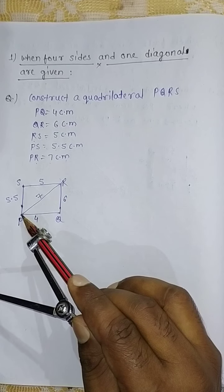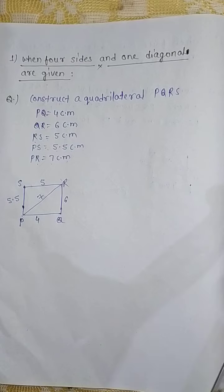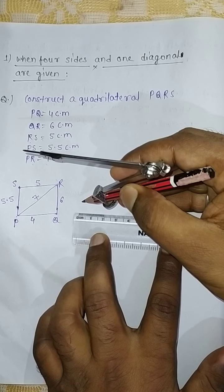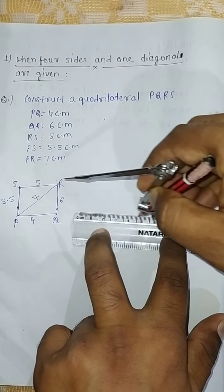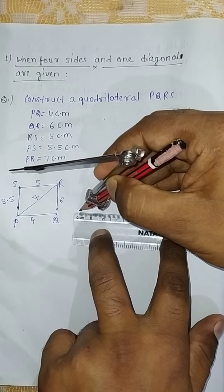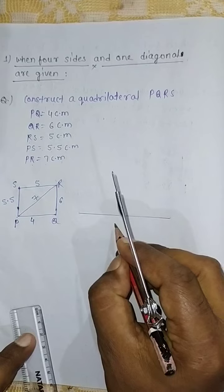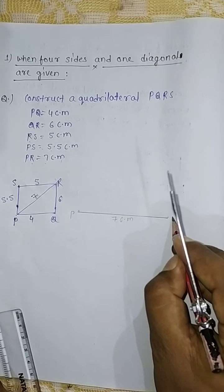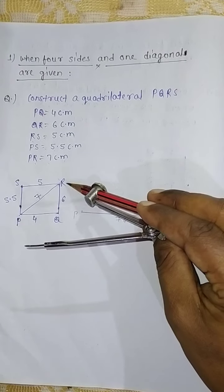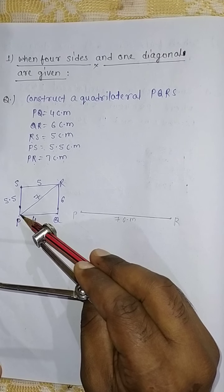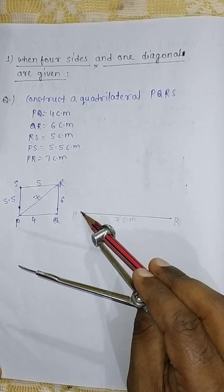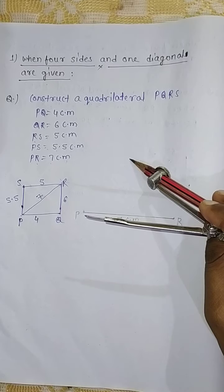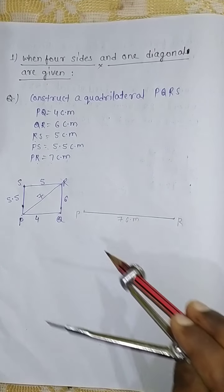First of all, draw the diagonal PR that is 7 cm, by the help of scale and pencil. This gives us a line from 0 to 7 cm. This point is P and this point is R. The diagonal PR is drawn as a straight line. For triangle PSR, S goes to the upward side, and for triangle PQR, Q goes to the downward side.